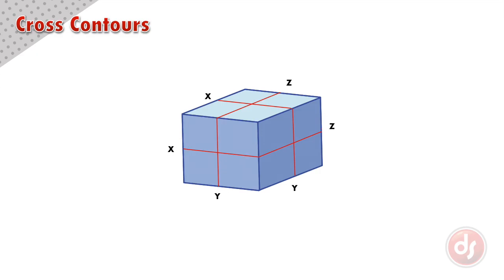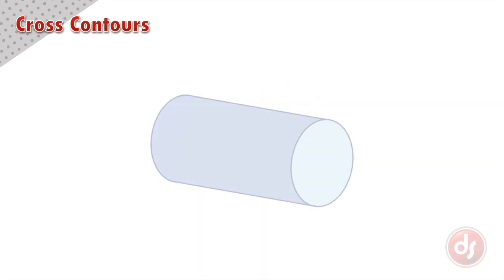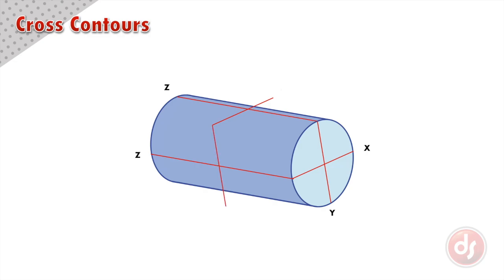If we tried the same thing on a cylinder, the cross contours would still represent our X, Y, and Z line systems. But if we put an X line and a Y line through the center, these cross contours don't conform to the curve of the cylinder. If we bend these lines to match the curve, they are no longer true X and Y lines, but a curve that moves across both of these line systems.